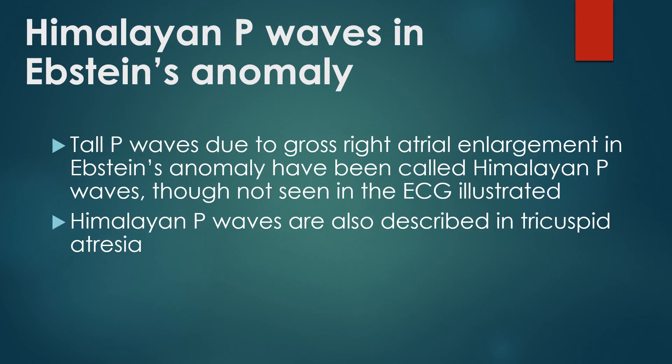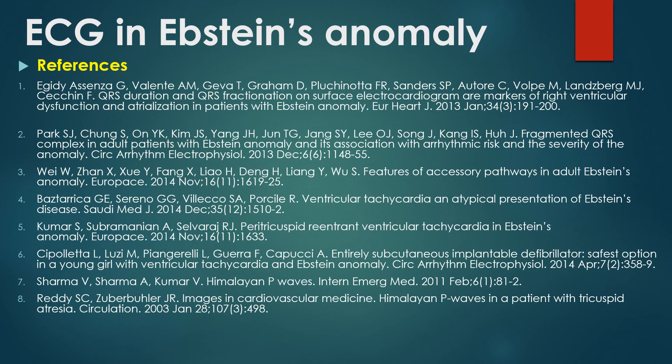Tall P waves due to gross right atrial enlargement in Ebstein's anomaly have been called Himalayan P waves, though not seen in the ECG illustrated here. Himalayan P waves are also described in tricuspid atresia. Here are some important references for the ECG abnormalities discussed in Ebstein's anomaly.